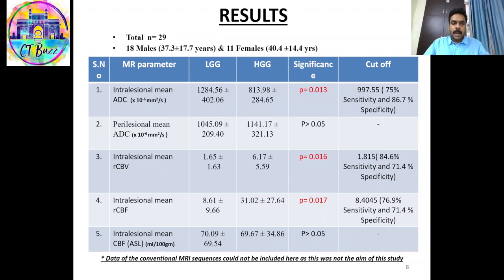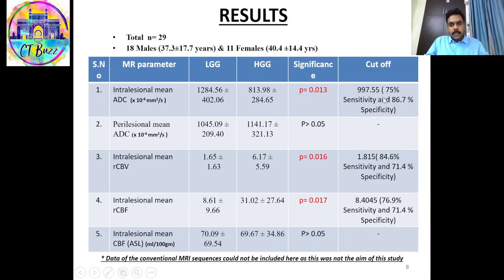Of the total 29 patients, there were 18 males and 11 females. Among the MRI parameters, the intratumoral mean ADC was found to be significantly lower in high-grade gliomas, with a cutoff of 997.55, at 75% sensitivity and 86.7% specificity.